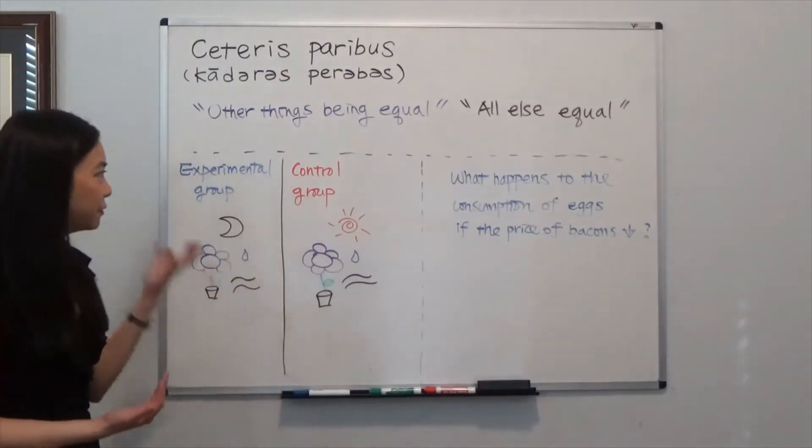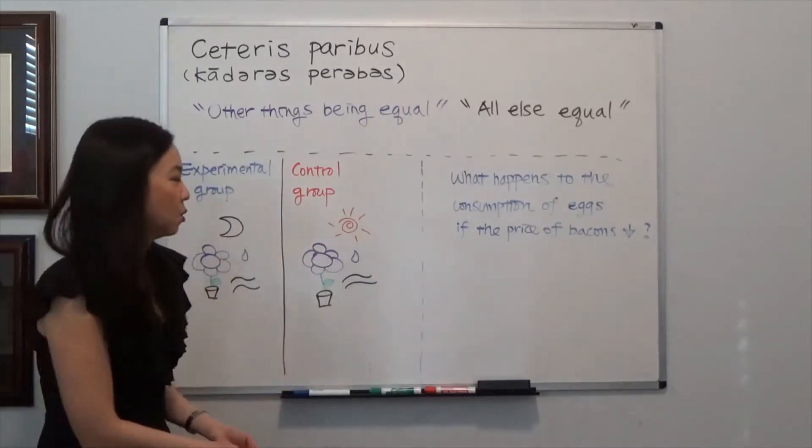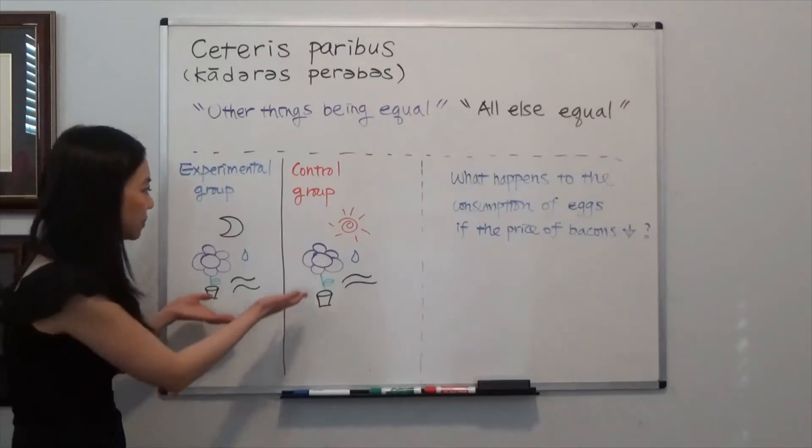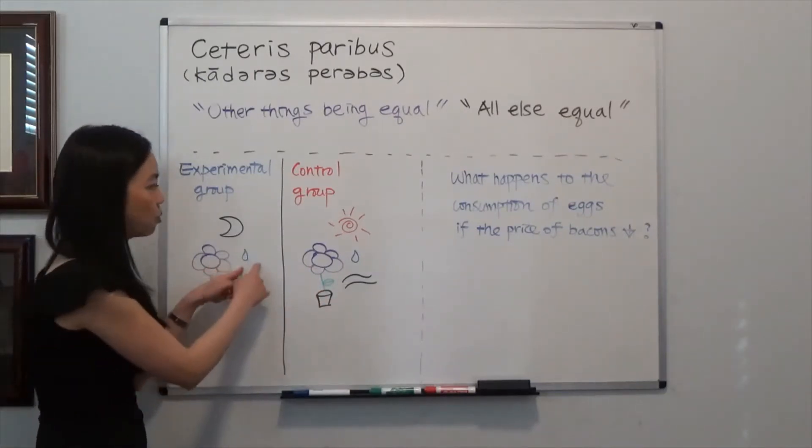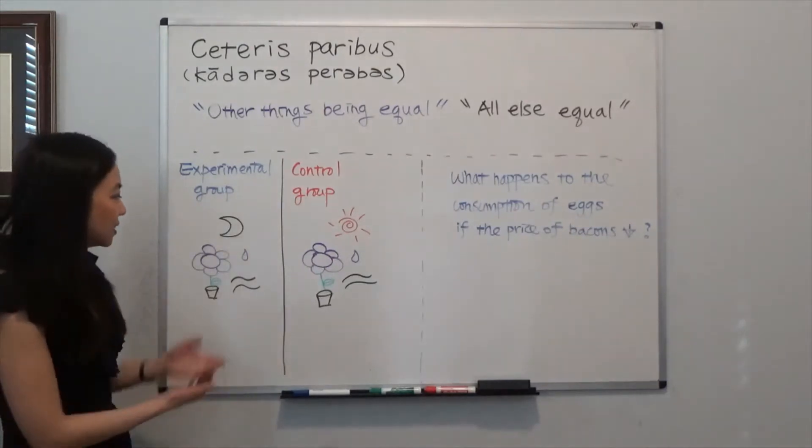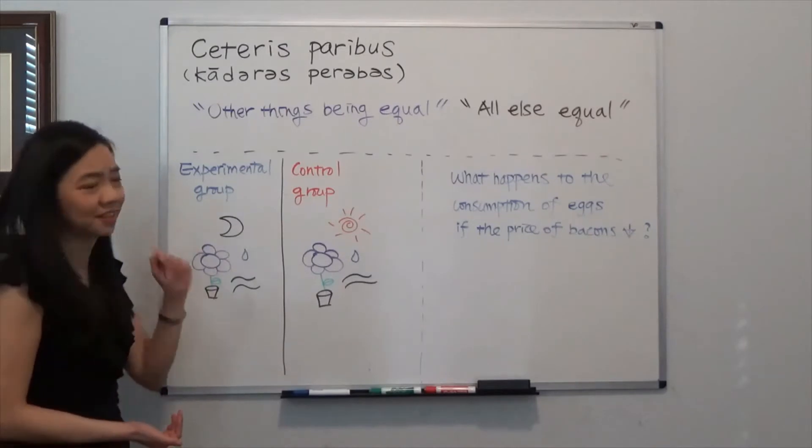So if you remember, you have an experimental group and you have a control group. We have exactly the same plant and we give them exactly the same amount of water, maybe the same amount of fertilizer and the same amount of air. The only thing that is different is the sunlight.